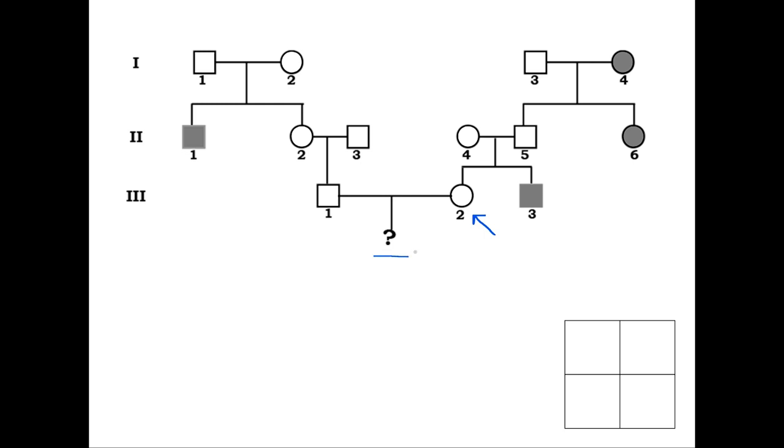We can do a careful stepwise analysis of the phenotypes and likely genotypes in the family tree to determine the probability of the child having the trait. Let's start with what we know from the pedigree. Neither the woman nor her husband, individual 3-1, is affected by the genetic trait of interest.